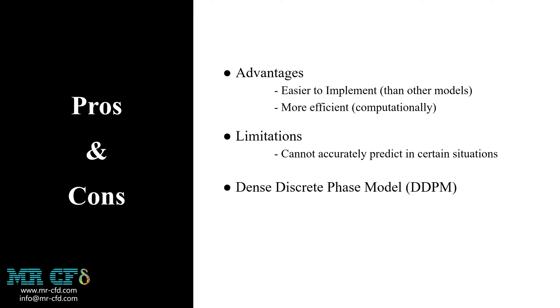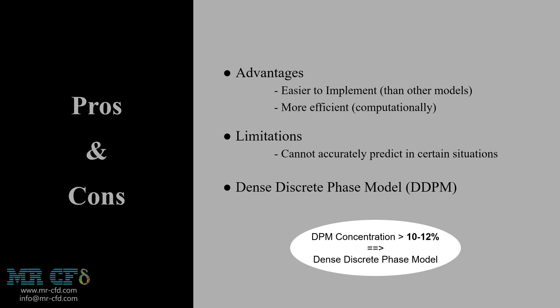For now, just note that, as a rule of thumb, when the secondary phase concentration is more than 10 or 12%, we assume it as a dense phase and put DDPM in priority for simulation.